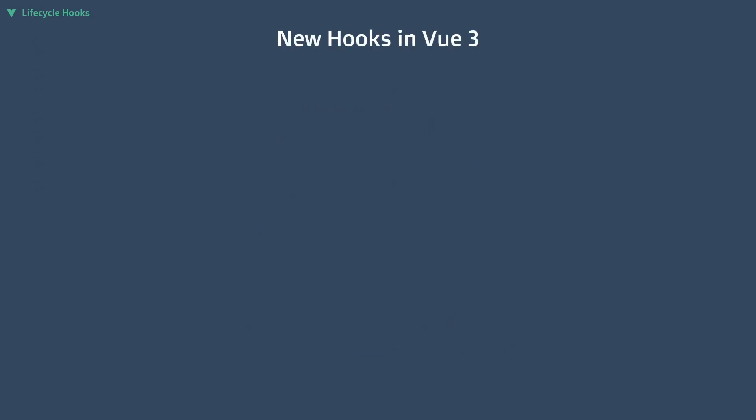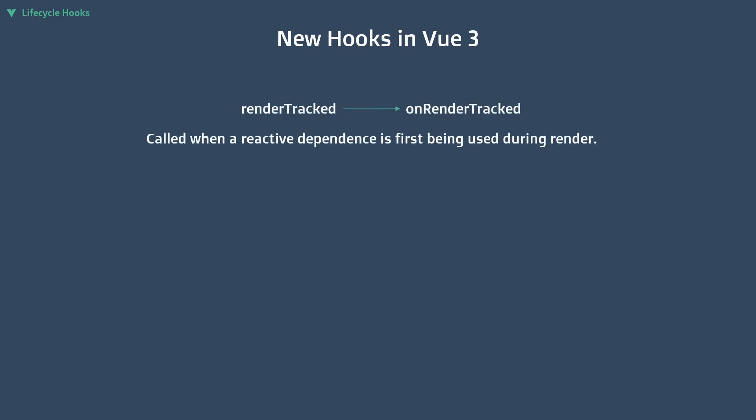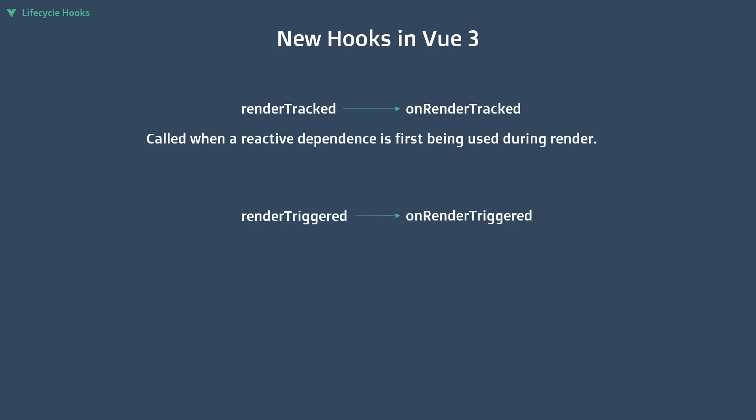In Vue 3 there are two new lifecycle hooks. The first one is onRenderTracked, which is called when a reactive dependency is first being used during render. This may be useful when you want to see what is being tracked. The second is onRenderTriggered, which is called when a new render is triggered. This may be useful for debugging performance when you want to see what is causing a re-render. With the release of these two new functions, I'm interested to see what the community will develop to make Vue debugging easier.